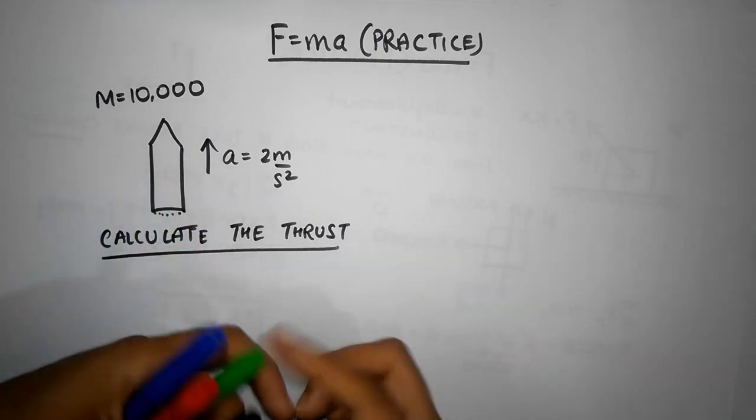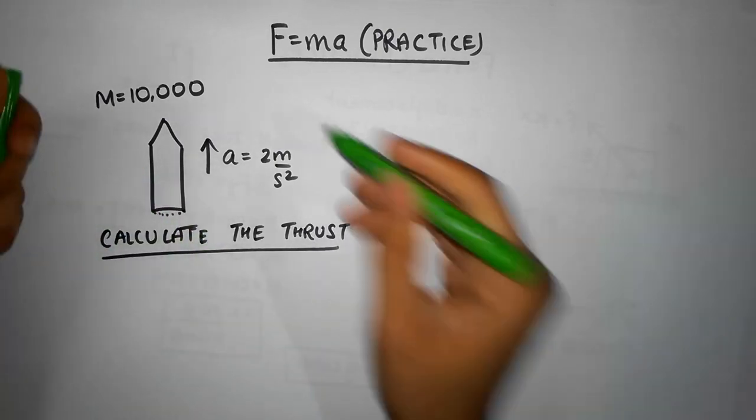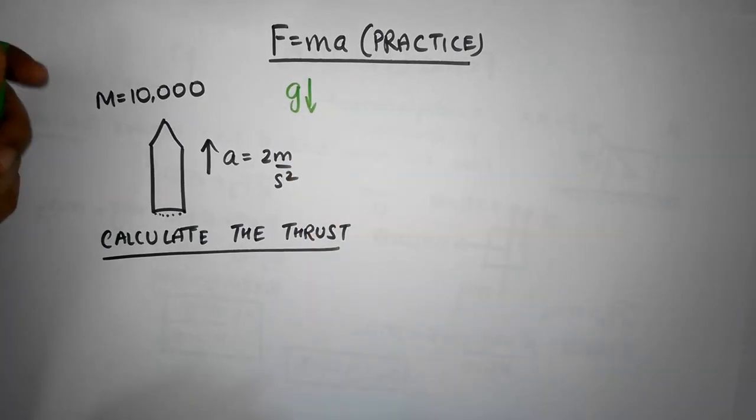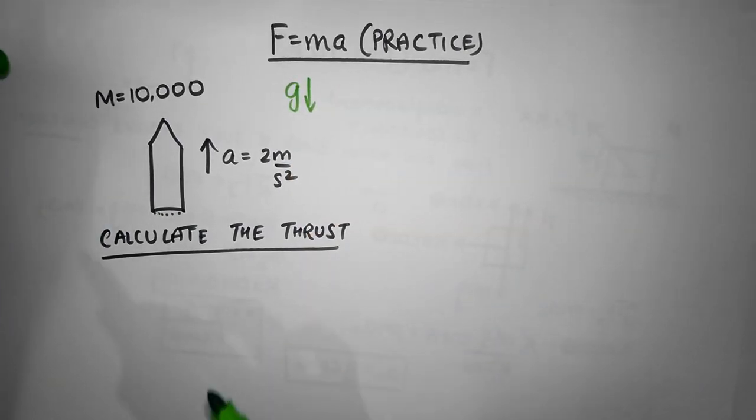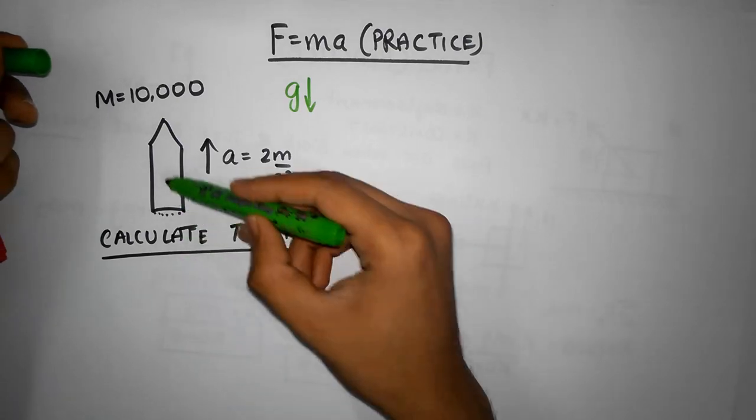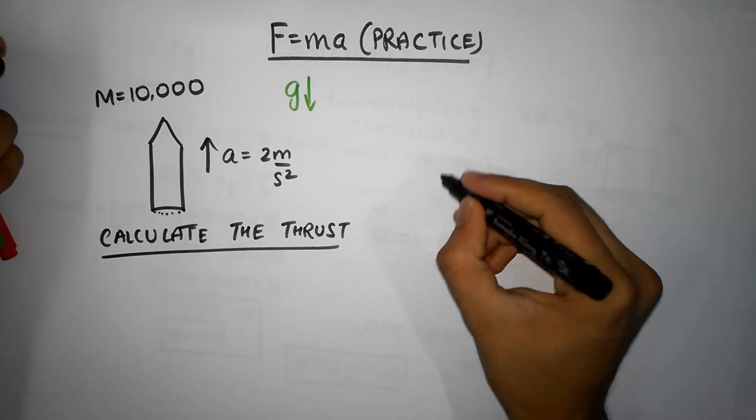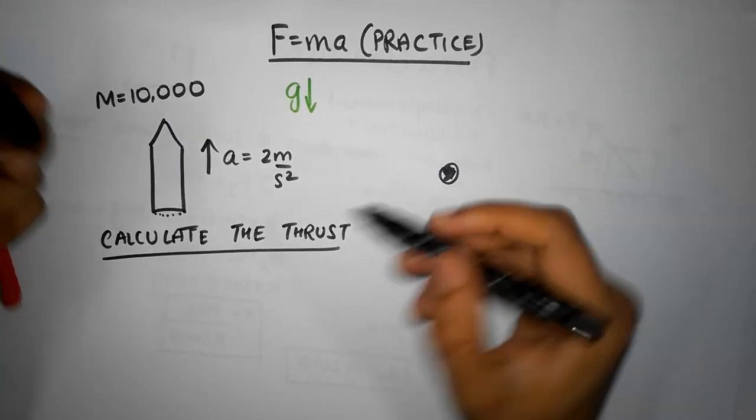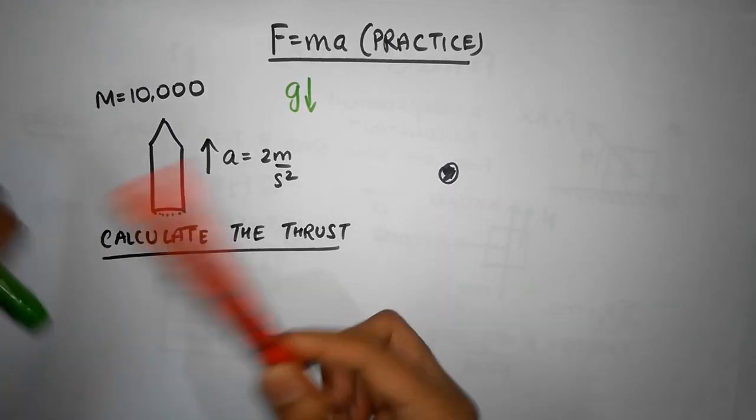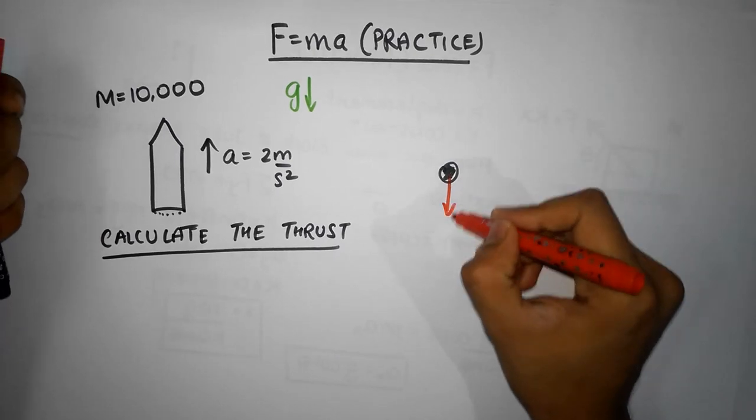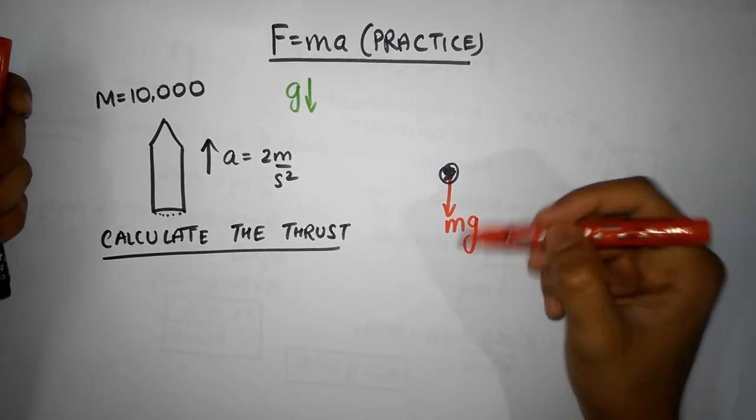In such case, remember that gravity is also acting on this rocket. So if you draw a free body diagram, if here is your rocket, then there's a force mg acting downwards and there's a thrust force acting upwards.